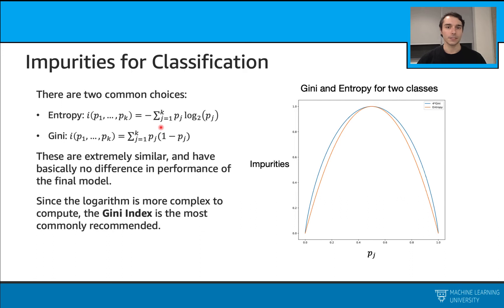For Gini, this is again very similar. We use the probability times 1 minus probability this time. Overall, these are extremely similar measures. Sometimes we can prefer Gini because it runs faster because we don't calculate this logarithm.